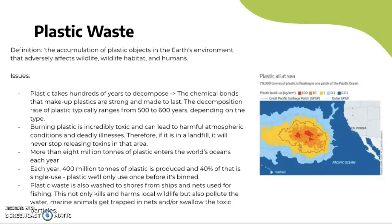Plastic waste is also washed to shores from ships and fishing nets, which not only kills and harms wildlife but also pollutes the water. Marine animals can get trapped in nets or swallow toxic particles. The Great Pacific Garbage Patch, located between Hawaii and California, illustrates this issue — it contains 79,000 tons of plastic in the Pacific Ocean, with the highest concentration at the center gradually decreasing outward.